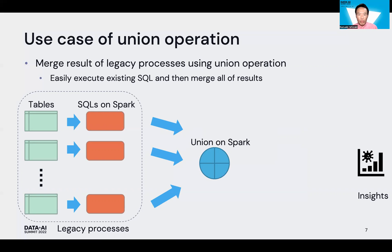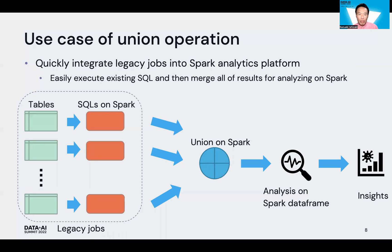In this case, first we execute legacy SQL code on Apache Spark. Then we merge these results using union operation into one data frame for ease of analysis. Union operation itself does not involve any data transfer, so we can quickly merge results into one data frame. Then we analyze merged data on Apache Spark and get business insights from those legacy processes.